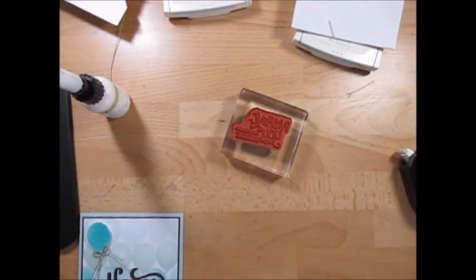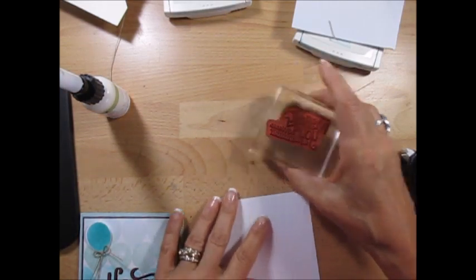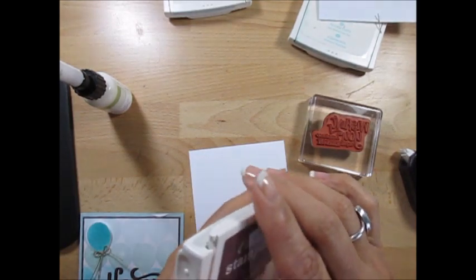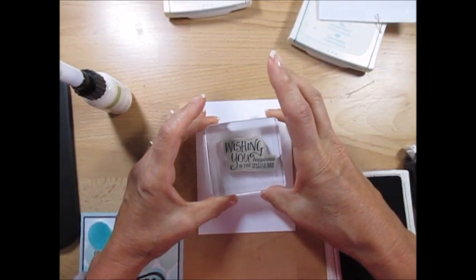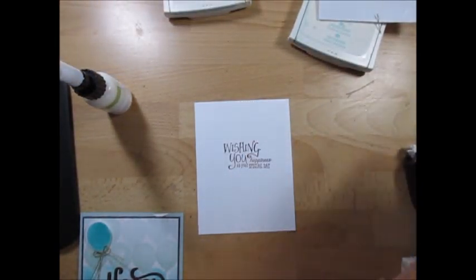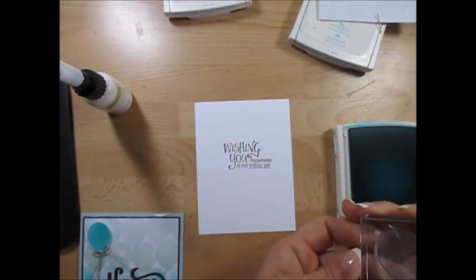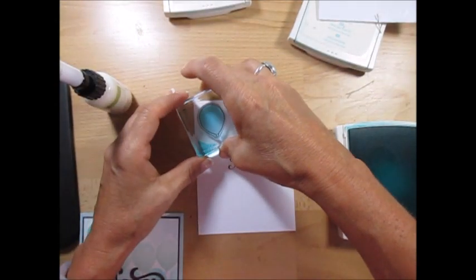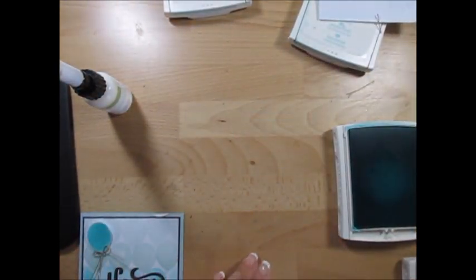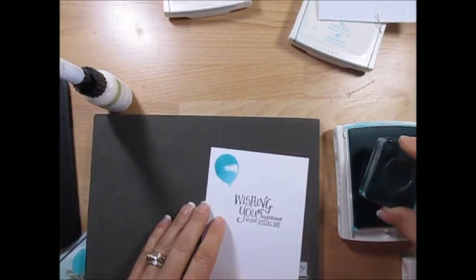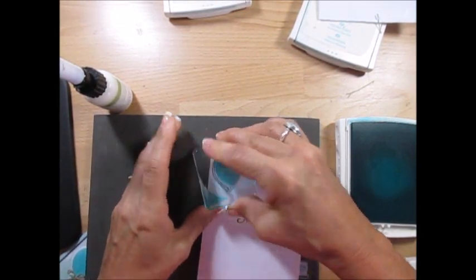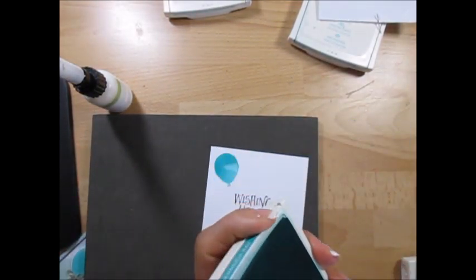Inside we're going to stamp in Fresh Fig. Wishing you happiness on your special day. And we're going to take a balloon. I'm going to use Bermuda Bay. I'm going to put that right there. See because I didn't have my foam. The balloon you really need that foam. I can come back. That's perfect though. The shading, I like it instead of just the white.